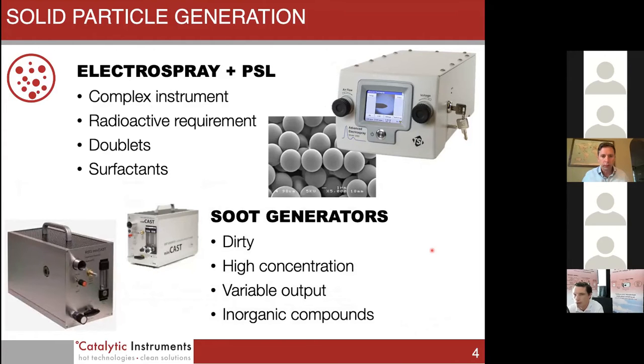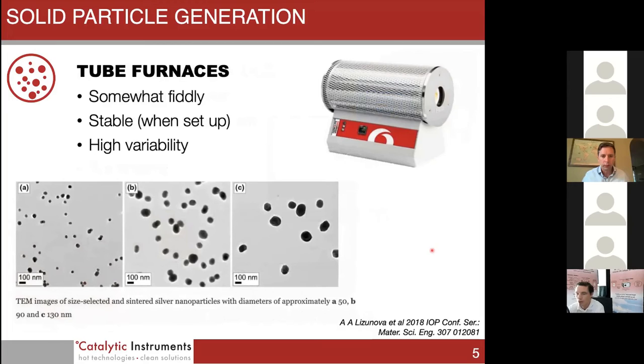Tube furnaces are somewhat fiddly but they are stable when set up, though they can suffer from high variability. Often you can set them up to operate quite well. Here's some TEM images of size-selected silver nanoparticles taken from such a furnace. These are sintered after generation to make them even more spherical even at the larger sizes.